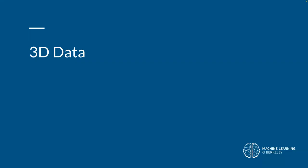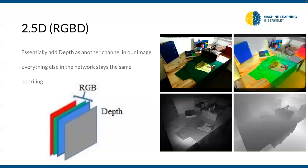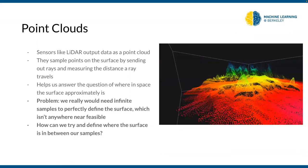3D data versus 2.5D, also known as RGBD: instead of having an RGB image you add a depth channel indicating how far away the object is — either from a defined plane or from a depth sensor on your phone that sends out rays and measures return distance. It's fairly straightforward; any CNN you've used can be converted to take four input channels instead of three and work exactly the same way.